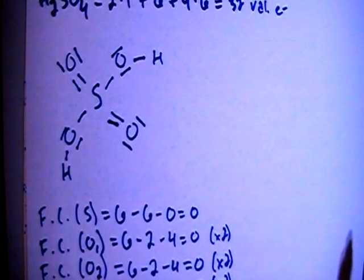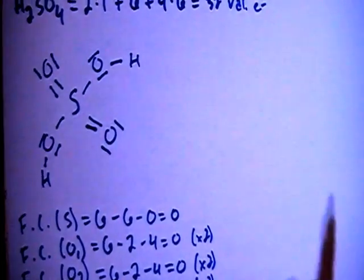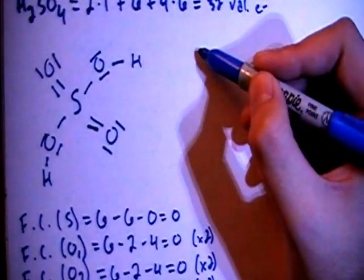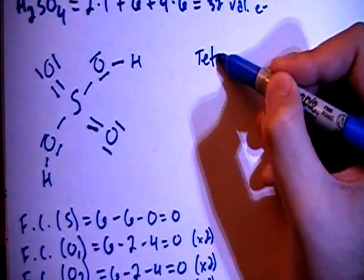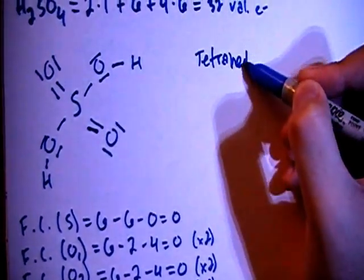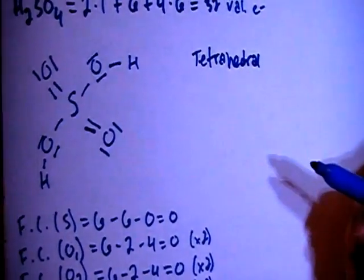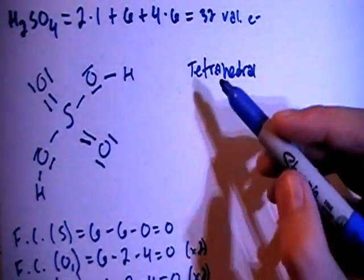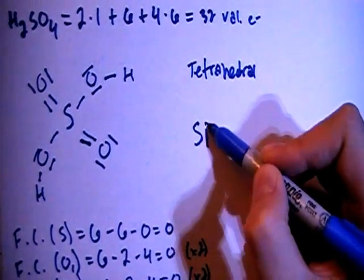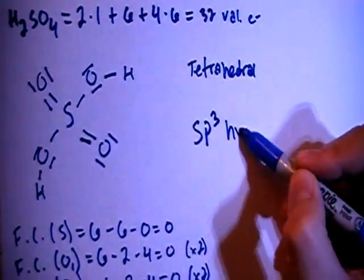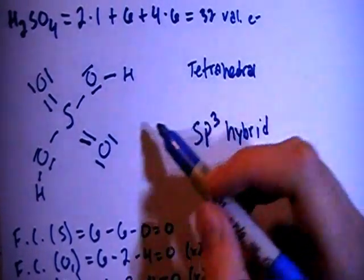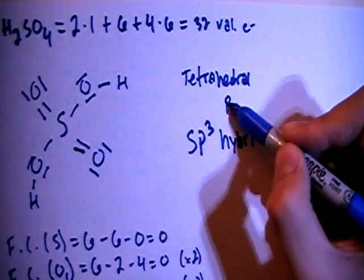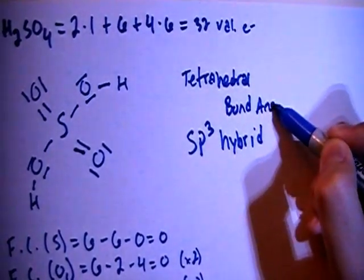And looking at the sulfur as the central atom and just the four surrounding oxygens, those are going to maintain a tetrahedral shape. And that's because there's one, two, three, four bonding sites, which means that it's going to be sp3 hybridized.